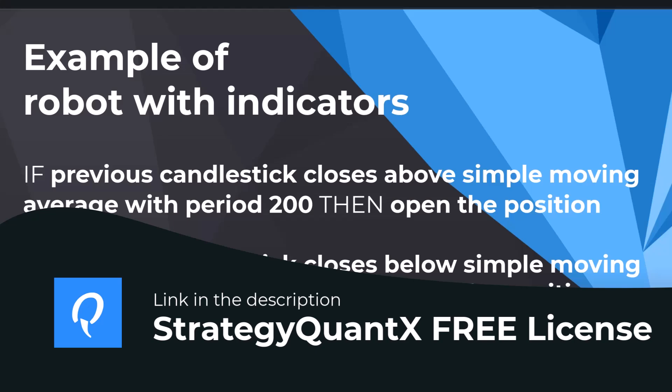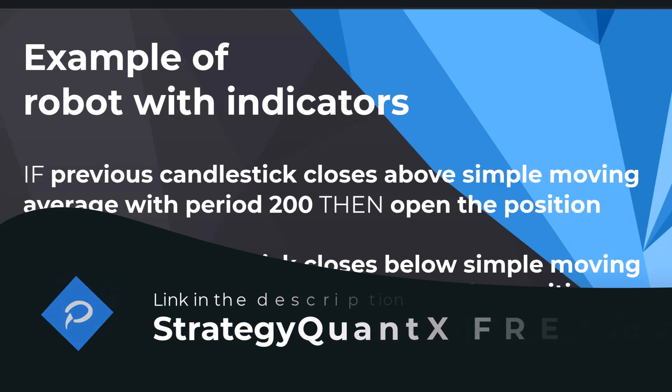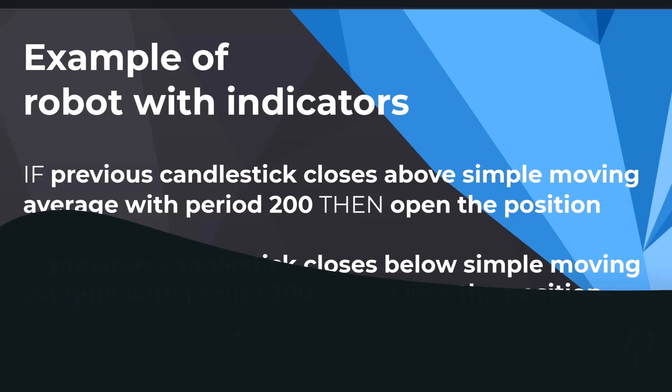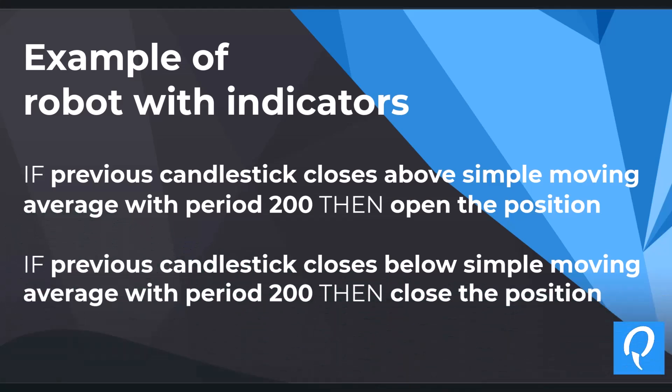The logic goes like this: if the previous candlestick closes above the simple moving average at period 200, then open the position. And if the previous candlestick closes below the simple moving average at period 200, then close the position.